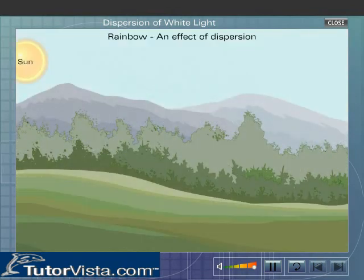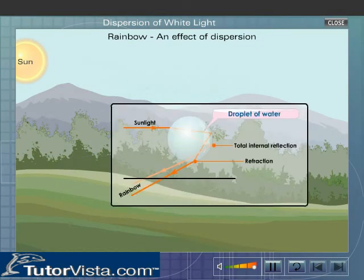Formation of a rainbow is an effect of dispersion. Drops of moisture in the atmosphere act as prisms and disperse the sunlight into its component colors.